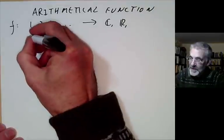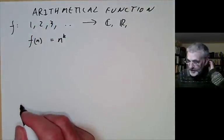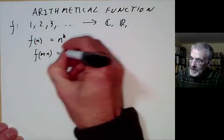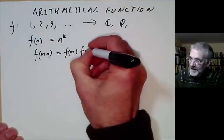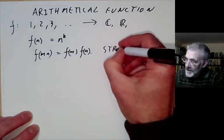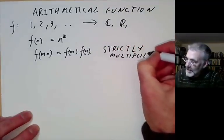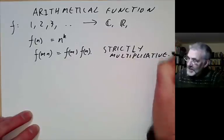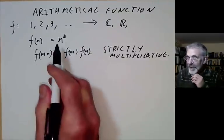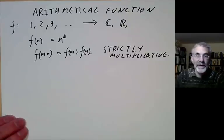There are some obvious examples. We could just have f(n) as some power of n, like n to the k. This has the property that f(mn) is equal to f(m) times f(n). Functions with this property are particularly interesting — they're called strictly multiplicative. We'll see what non-strictly multiplicative functions look like a little bit later.